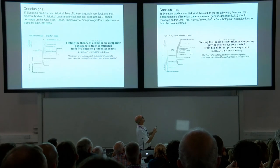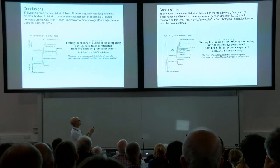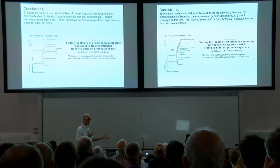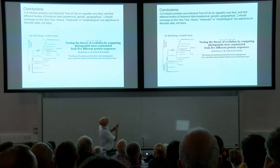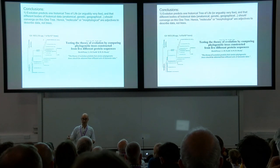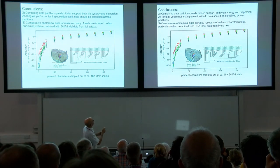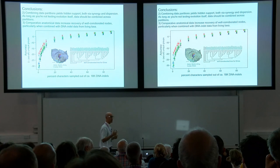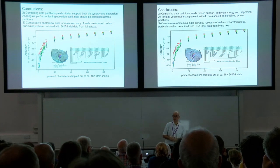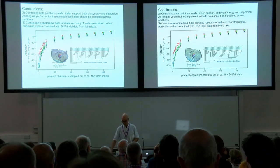Let me then conclude with two things. First, there is one historical tree of life — certainly for vertebrates, with some qualification about population-level reticulations or multiple origins — and partly for that reason we should use 'phylogenetic' as an adjective for tree, not 'molecular,' not 'morphological.' Second, combining data partitions is good. And finally, there is demonstrable historical signal in comparative anatomical datasets that succeed in reconstructing parts of the tree that are well known. With that, I thank you all very much for your attention.